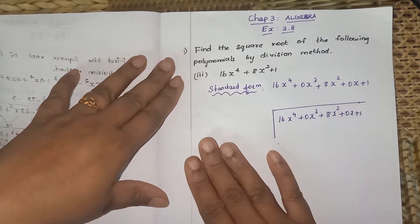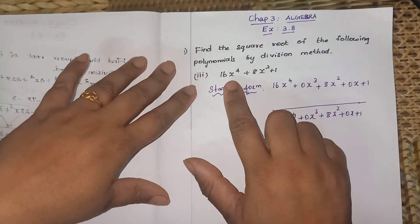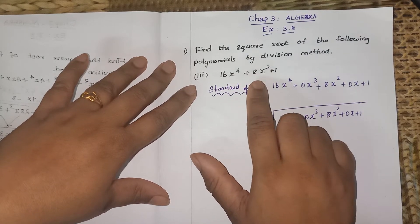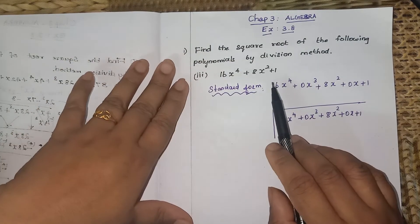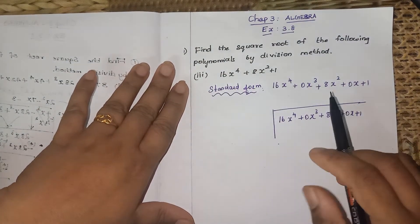This is a very important sum. The question is 16x to the power 4 plus 8x square plus 1. So first, what you have to check is whether it is in standard form or not.